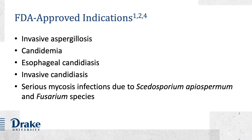There are currently five FDA-approved indications for voriconazole. Invasive aspergillosis originates from the aspergillus species. Candidemia, esophageal candidiasis, and invasive candidiasis are infections of the candida species. Serious mycosis infections are also approved indications for voriconazole.